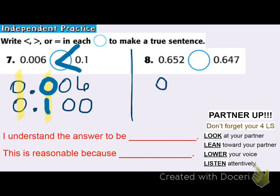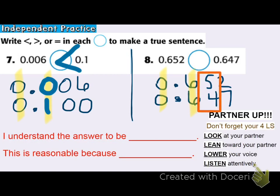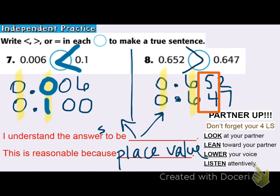Moving on to problem number eight, I'm going to choose to line up the decimal. Making sure that decimal is right underneath — they have the same number of digits, so I don't have to fill with zeros. I'll move to step two: compare using the greatest place value. Here's the difference in the hundredths place: 5 hundredths is bigger than 4 hundredths. So I know that 652 thousandths is greater than 647 thousandths. I know these are reasonable because of place value — start at the greatest place value on the left and work your way right to find which value is greater or less than the other.